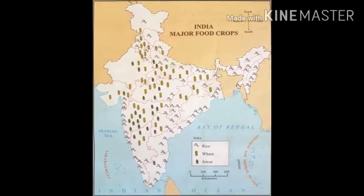In this map we are going to learn about India's major food crops. In the index we can see it is given as rice, wheat and jowar. Let's see which food crops are grown. Food crops grown on a large scale in the coastal region — coastal region means the area near the sea — include rice.